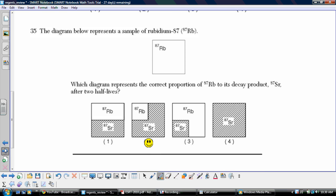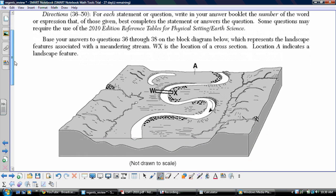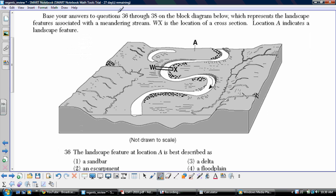That is the last question in part A. We're going to now move on to part B1, which is still multiple-choice sections. We're going to base our answers to 36 through 38 on the block diagram below, which shows the landscape features associated with a meandering stream. We've got WX here as the location of a cross-section of the stream. We've got location A here. It indicates a landscape feature.